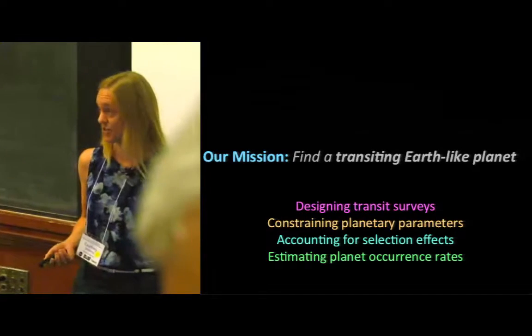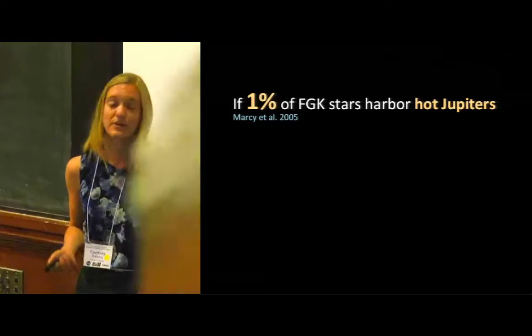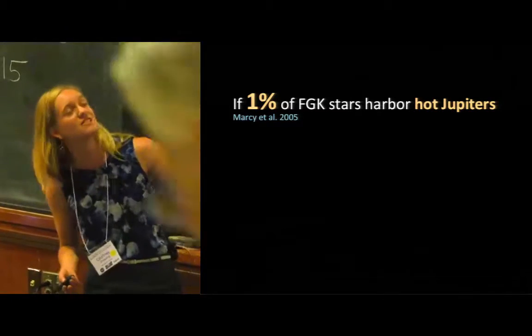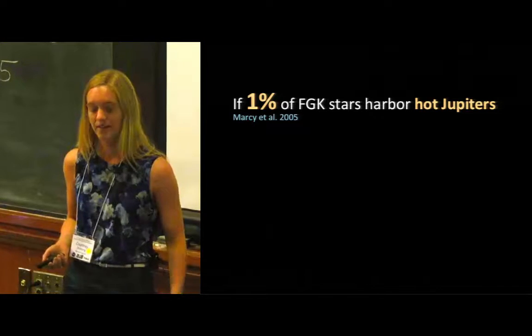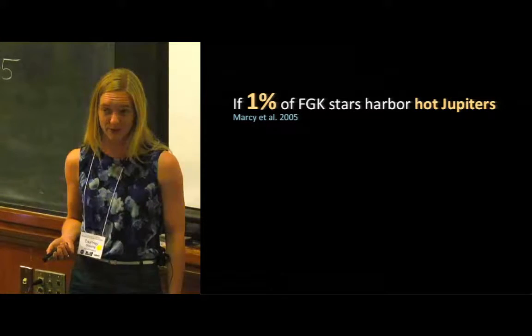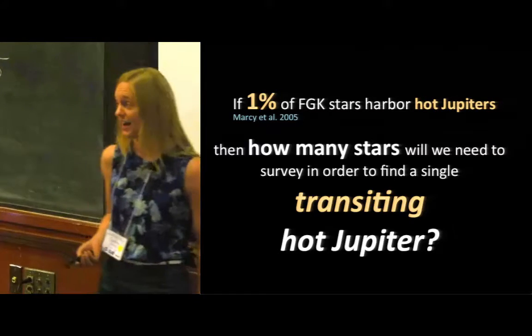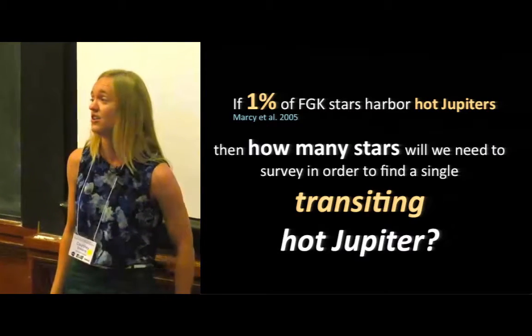We're going to begin with an assumption and that assumption is that we're going to say that 1% of stars host hot Jupiters. We can debate this number later, but this is just a starting point for now. Then the question I have for all of you is if we take that to be true how many stars would we need to look at in order to find just one transiting hot Jupiter?